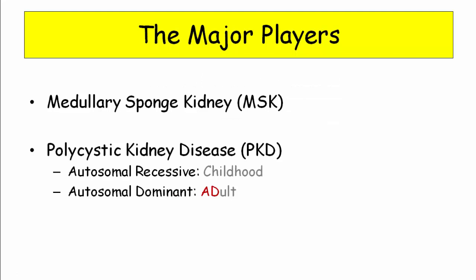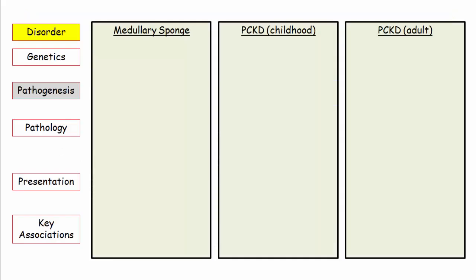The major players to be familiar with are medullary sponge kidney and polycystic kidney disease. PKD comes in two forms: autosomal recessive, which is the childhood form, or autosomal dominant, which is seen later in life. The differences between the two become a major area of test inquiry. Before we are done you will be familiar with the key genetic and pathologic descriptions as well as the clinical presentation and key associations for the USMLE.